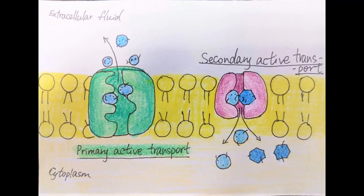Secondary active transport is the transport of molecules across a cell membrane utilizing energy in forms other than ATP. This energy comes from the electrochemical gradient created by pumping ions out of the cell.